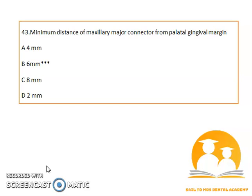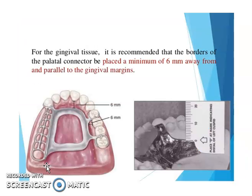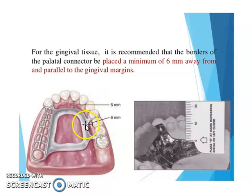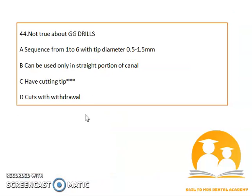The minimum distance of the maxillary major connector from the palatal gingival margin is 6 mm. As shown in the diagram, the distance of your palatal connector should be 6 mm and it should be parallel to your gingival margins.